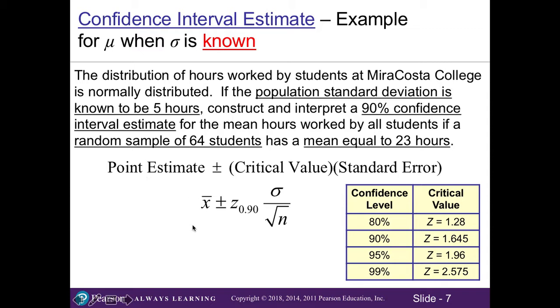Then we want to find our critical z value based on a 90% confidence level. You could go into Appendix D and try to work backwards, but it's easier to use our table. 90% has a z value of 1.645. Our population standard deviation is given to us at 5 hours, and our sample size of students is 64. So we have all the pieces that we're going to plug into the formula.